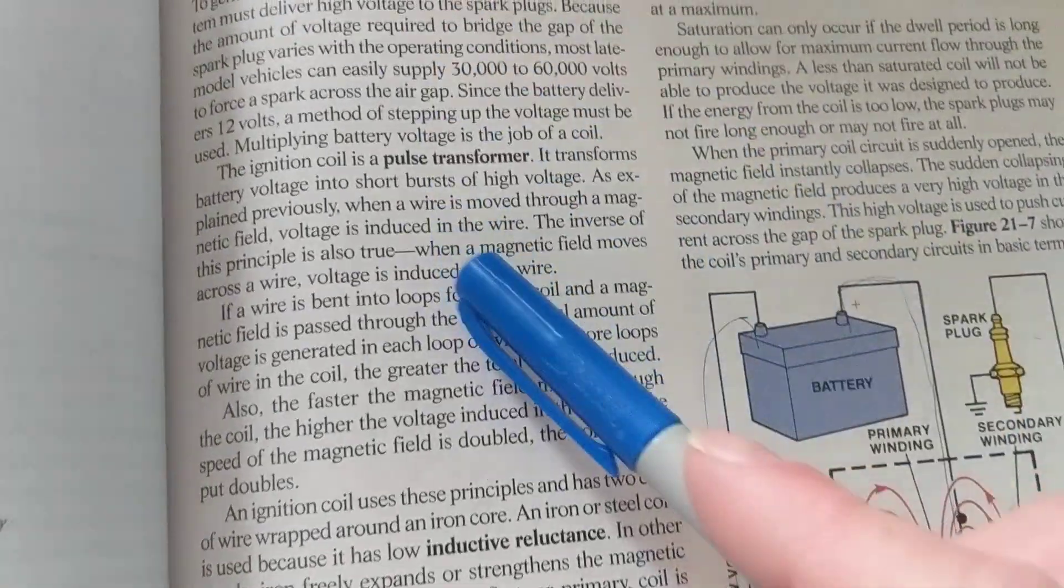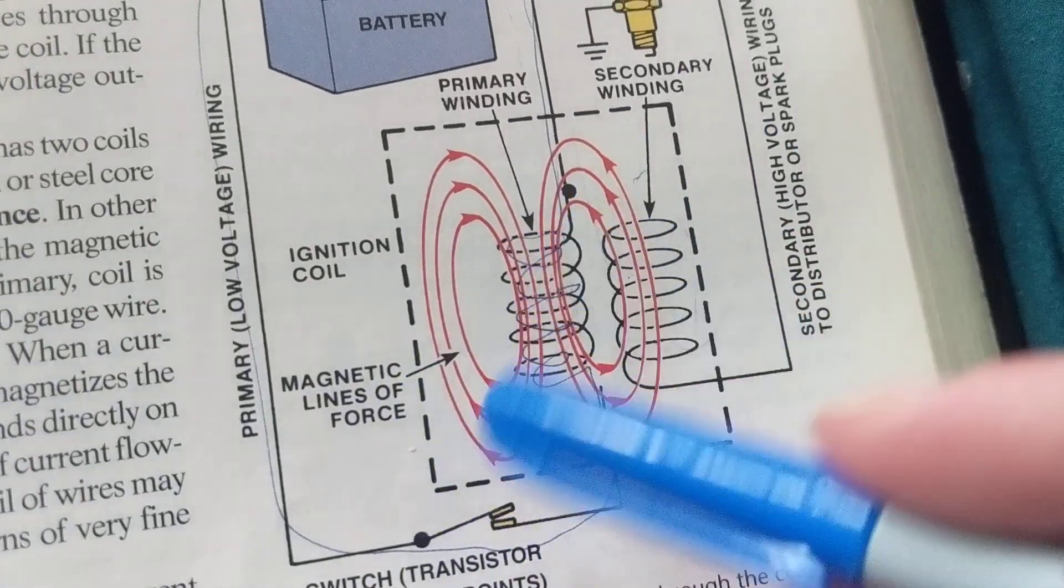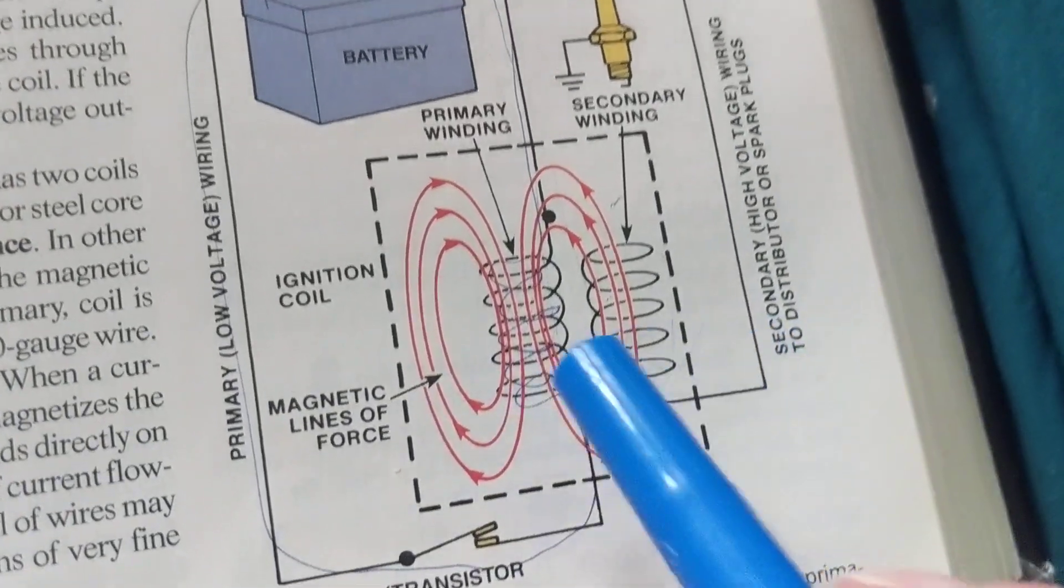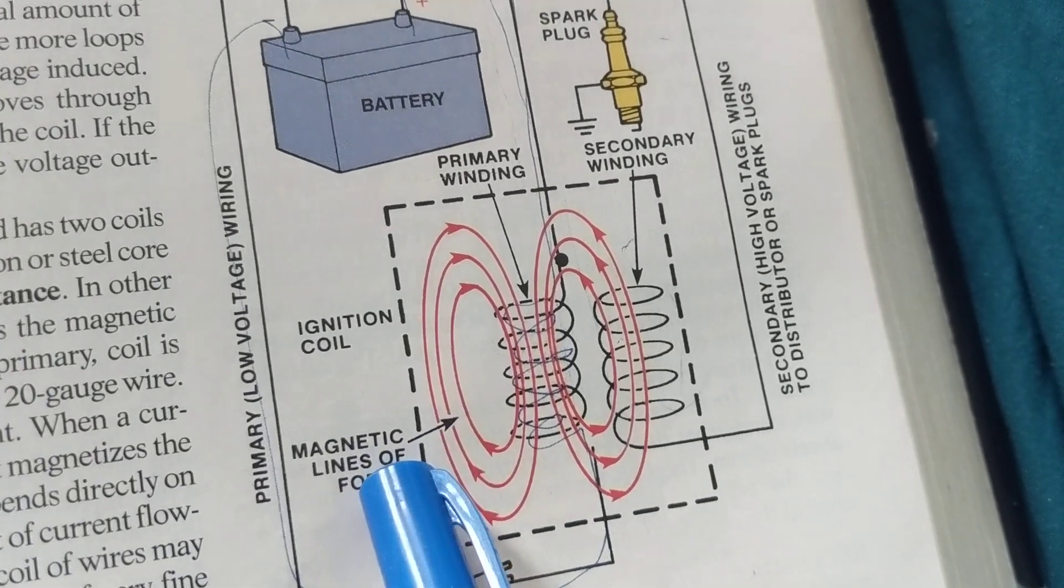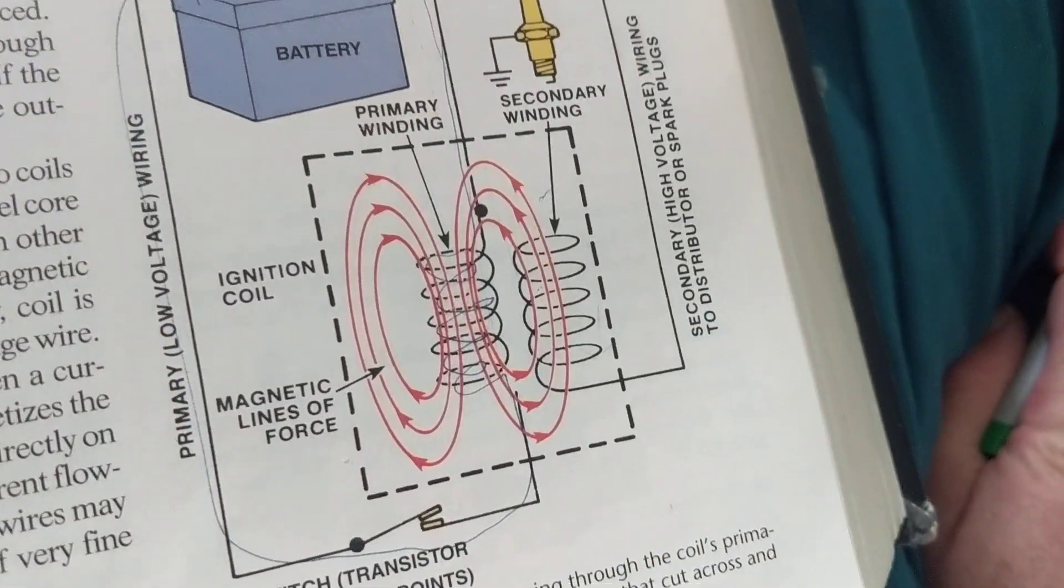So it is a pulse transformer, meaning it's on and off, on and off, on and off. AC in your house, when the current, when the voltage in your house comes from the supplier...